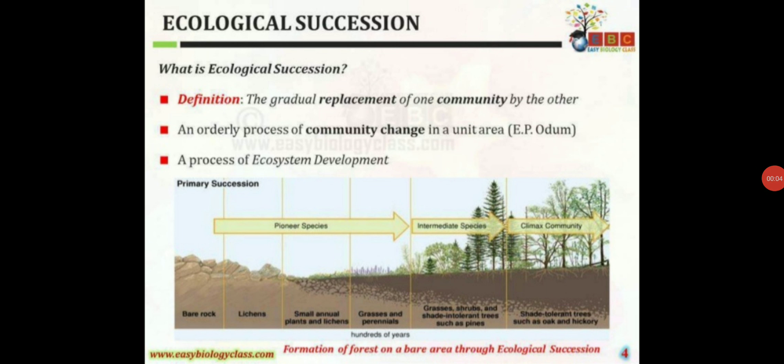Ecological Succession is a process of directional change in the composition of a community in an area on an ecological timescale. It includes structural changes like changes in species composition, species diversity, etc., and functional changes like energy content. It involves interaction between species of the community and modification of the physical environment of the community.